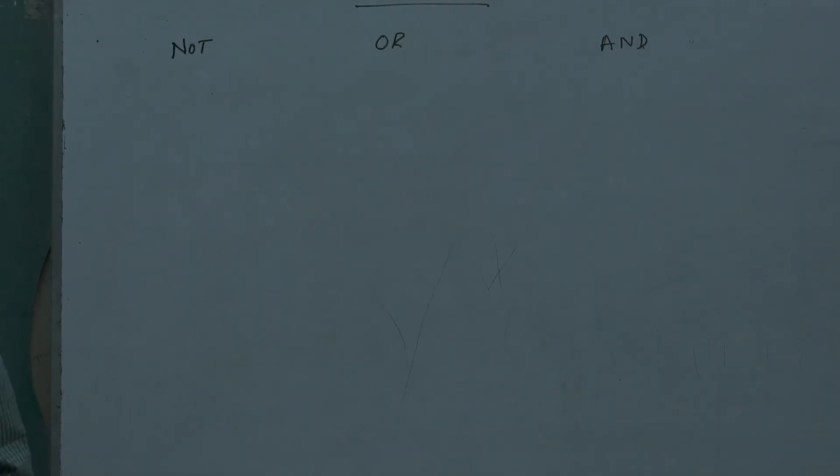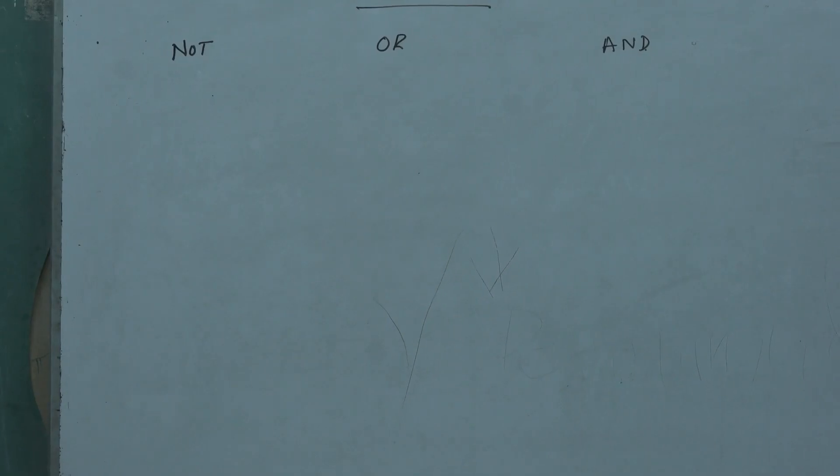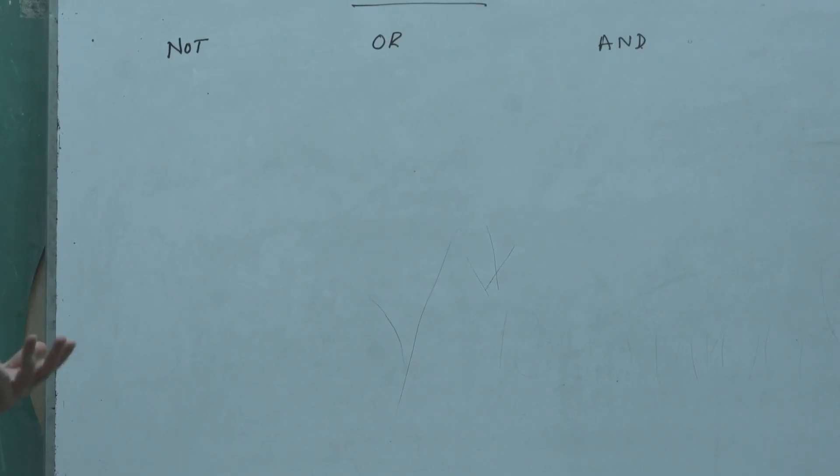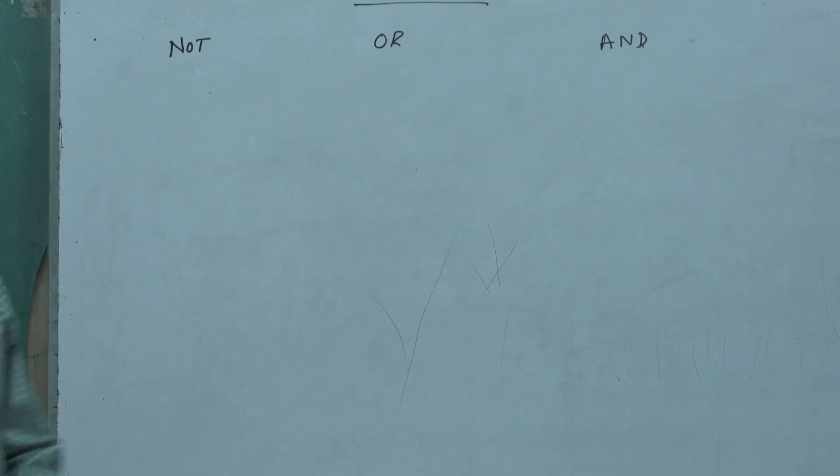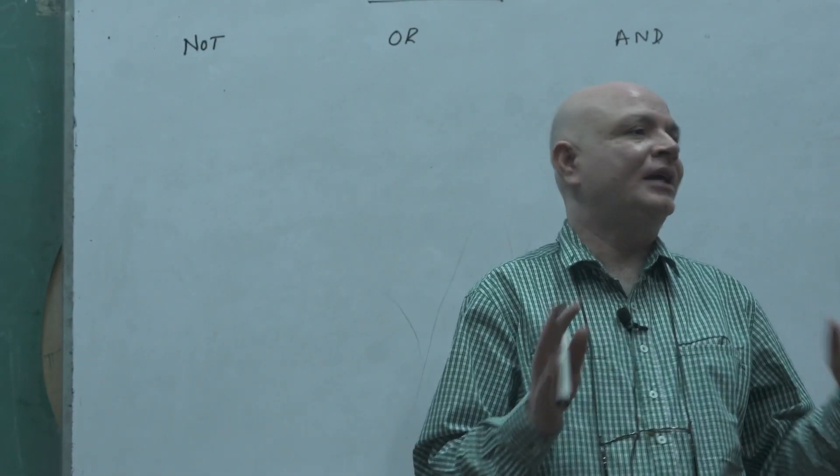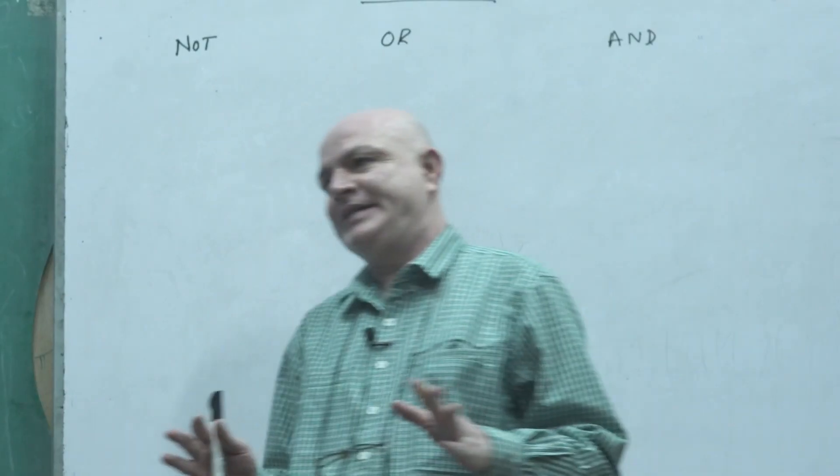Last time I told you about the negation. In negation I told you about the truth table. And in truth table you have learned the two basic characteristics of the negation.